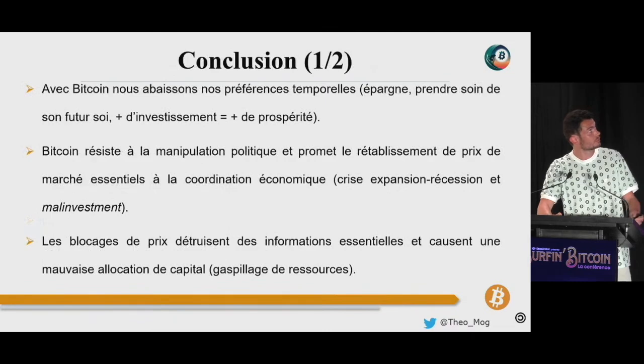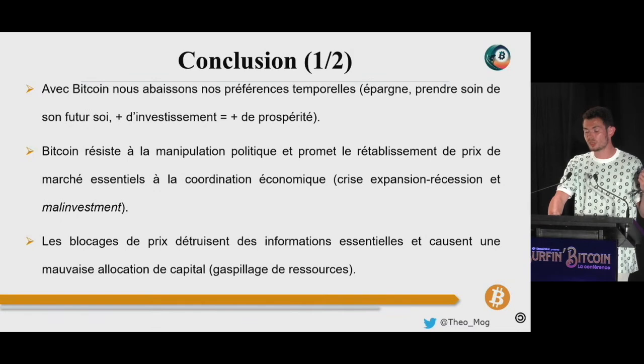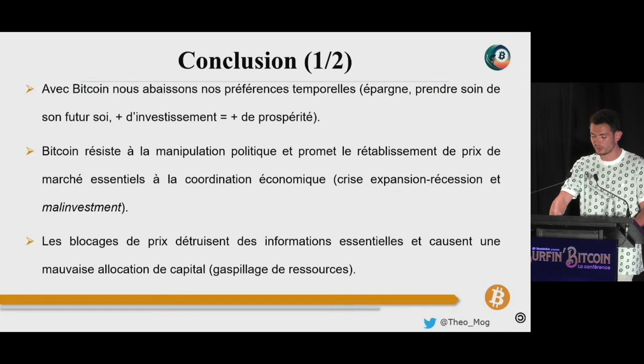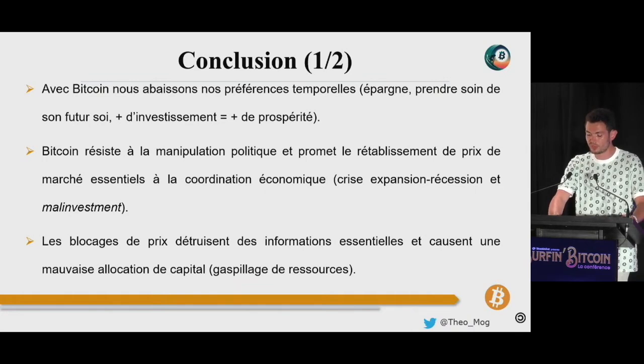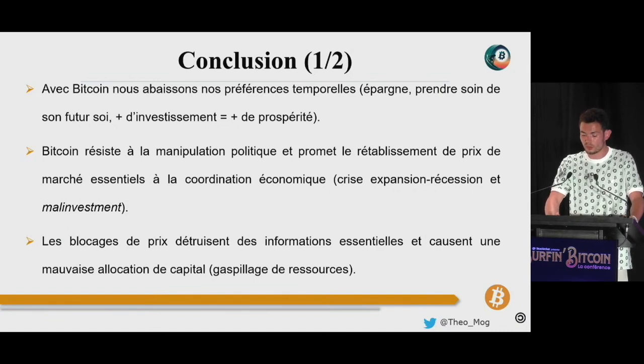Bref, si je suis tombé dans le rabbit hole de l'économie autrichienne, c'est avant tout parce qu'elle nous livre des outils d'analyse puissants pour comprendre les causes des tares qui infligent notre civilisation aujourd'hui. Mais c'est aussi et surtout parce qu'elle nous explique en quoi Bitcoin en est parfaitement le remède. Grâce au mécanisme d'ajustement de la difficulté, Bitcoin offre à ses détenteurs des garanties de préservation de pouvoir d'achat inédites dans l'histoire. Il suffit d'observer les changements de style de vie opérés par les Bitcoiners pour voir en temps réel l'influence de la monnaie dure sur les préférences temporelles.